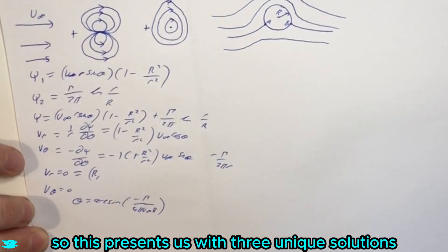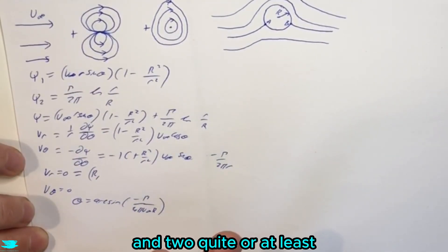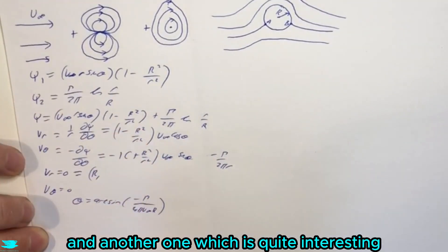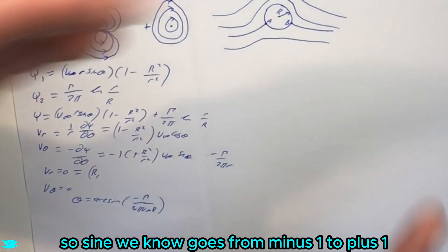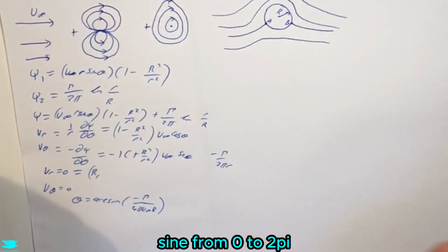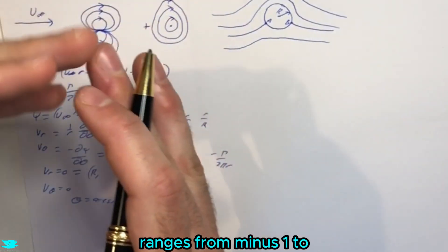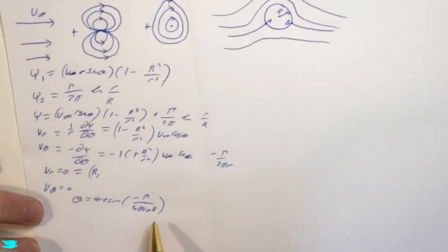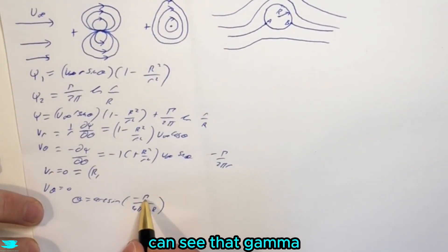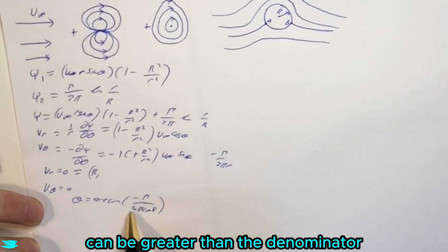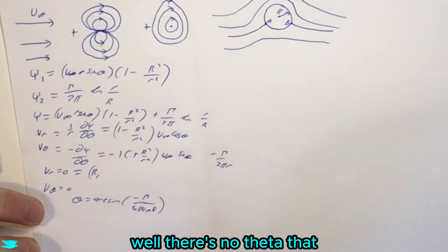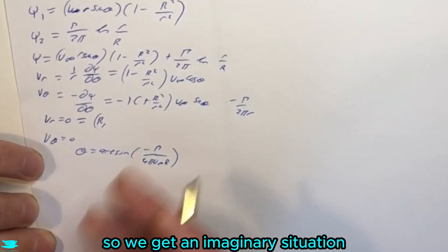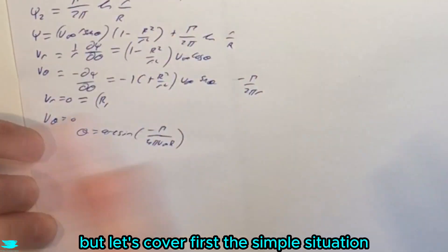And rearranging this equation here, we then get theta equals arc sine minus gamma on 4 pi v infinity capital R. So this presents us with three unique solutions, and two quite, or at least one very interesting one, and another one which is quite interesting. So sine, we know, goes from minus 1 to plus 1. Sine from 0 to 2 pi ranges from minus 1 to plus 1, depending on what the theta is. But in this equation, we can see that gamma, the circulation of this vortex, can be greater than the denominator. So that means that arc sine is greater than 1, which means that, well, there's no theta that really corresponds to that.